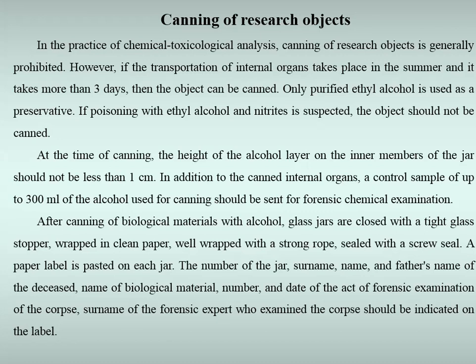In addition to the canning of internal organs, a control sample of up to 300 ml of the alcohol used for canning should be sent for forensic chemical examination. After canning of biological materials with alcohol, glass jars are closed with a tight glass stopper, wrapped in clean paper, wrapped with a strong rope, and sealed. A paper label is affixed to each jar indicating the jar number, surname, name, and father's name of the deceased, name of the biological material, number and date of the act of forensic examination, and the surname of the forensic expert.